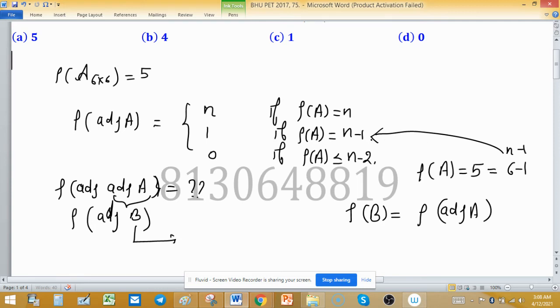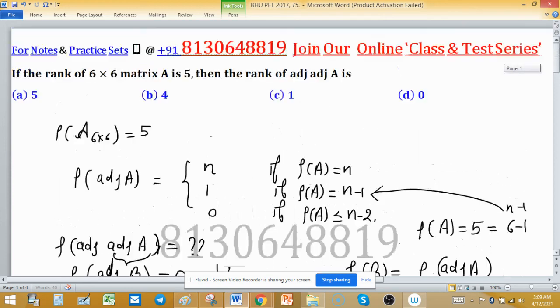...is the n-1 type, so rank of adjoint A will be 1. Now, rank of B is 1, which is less than n-2. So rank of adjoint B will be 0. Therefore, option D is correct.